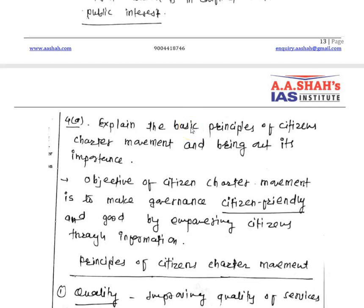Citizen Charter kya hota hai? Whenever you visit a government website or official website, you will find one citizen charter. Every organization mentions what is their objective, what is their mission, what services they provide, and in what time they deliver those services. This necessary information about their service or domain areas they provide in the citizen charter.